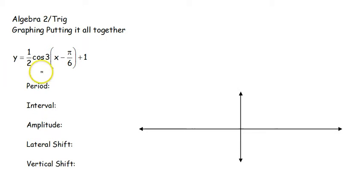So we have our first equation. We see that we are given an a value as 1 half, the b value is 3, our h is π over 6, and our k is a positive 1. What all of those numbers mean?